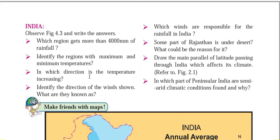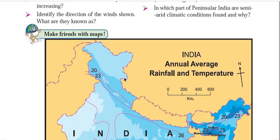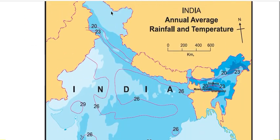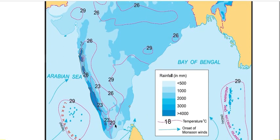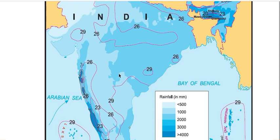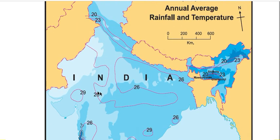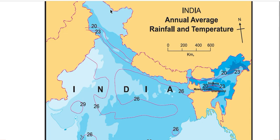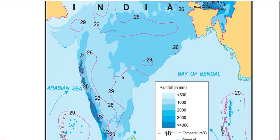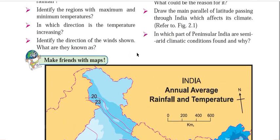In which direction is the temperature increasing? We can see from north to south and from south to north towards the Tropic of Cancer, temperature increases. You can see isotherms reading 20, 23, 26, then 29 degrees Celsius, both on the eastern and western sides. So in central India it is maximum, and as we move from north or south toward the Tropic of Cancer, we find an increase in temperature.